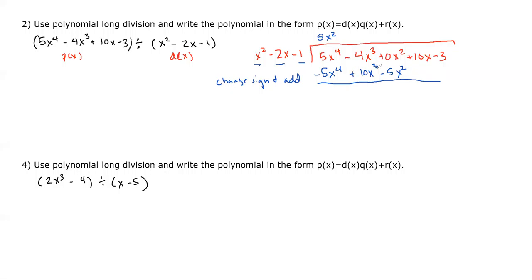Now we change the sign and add, giving us −, +, +. So the leading term cancels to zero, and we're left with 6x³ + 5x² + 10x − 3. We do the process again: what multiplied by x² gives 6x³? That's + 6x.